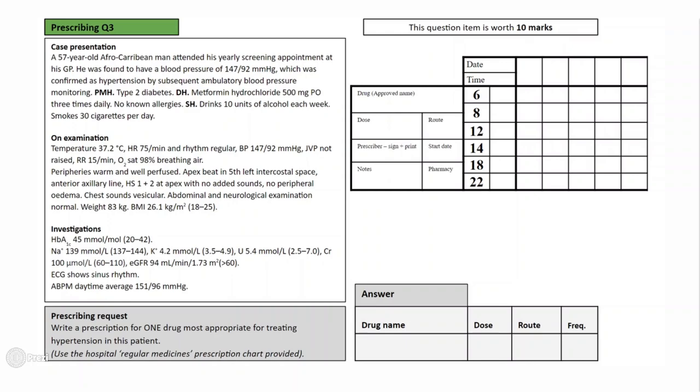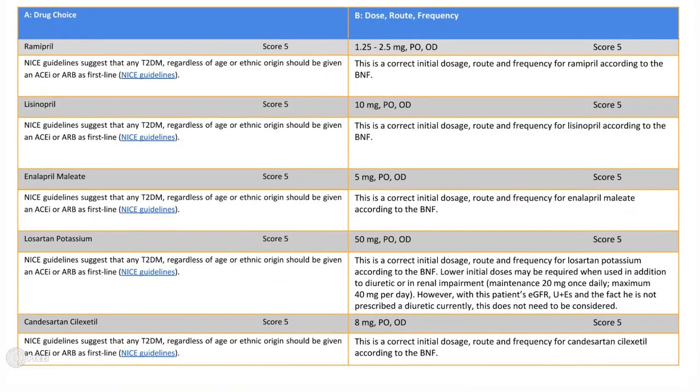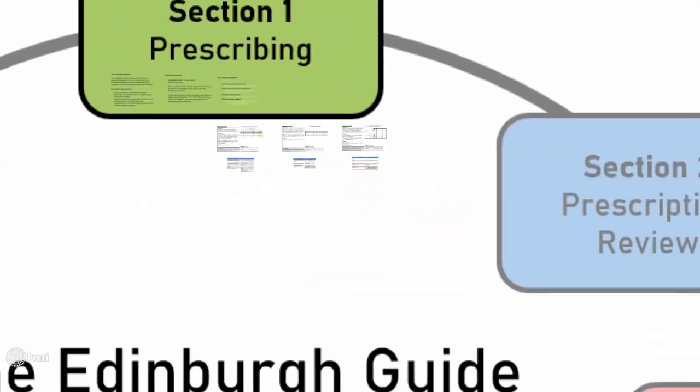Thus, acceptable answers for this question that would all receive full marks include ramipril, lisinopril, enalapril, losartan, or candesartan. The correct initial starting doses from the BNF should be what is entered into the dosage, as this is only altered afterwards, but as the initial prescriber, these are the doses that you will begin with. All of the drugs are administered orally and taken once daily. For this question, these would be the only acceptable answers as the man is a type 2 diabetic, so marks would not be given for any calcium channel blocker prescribed. All correct answers, their doses, routes, and frequencies are shown here on our answer slide. Hopefully that's clear and has emphasized you should focus on all aspects of the clinical presentation to find the most appropriate drug choice.